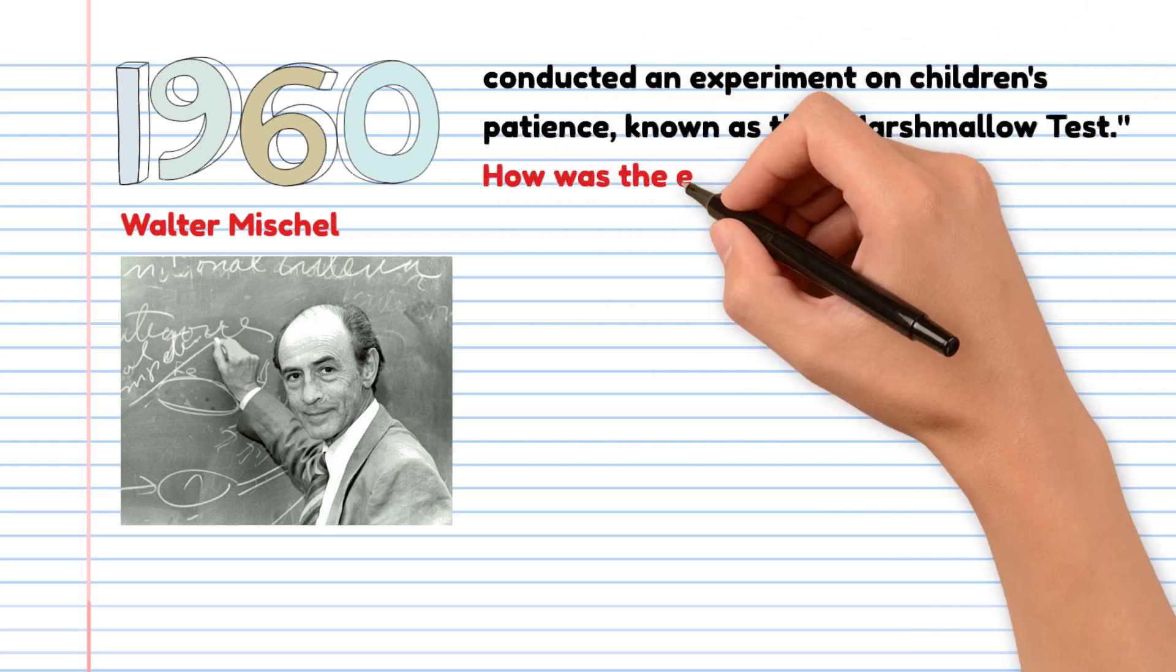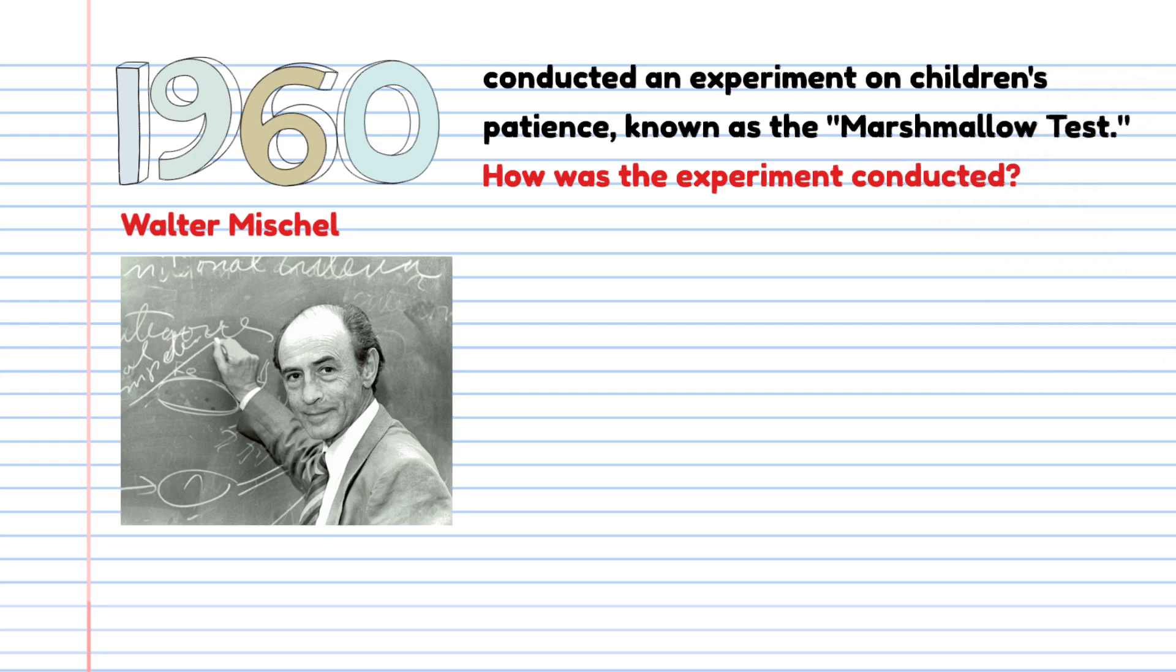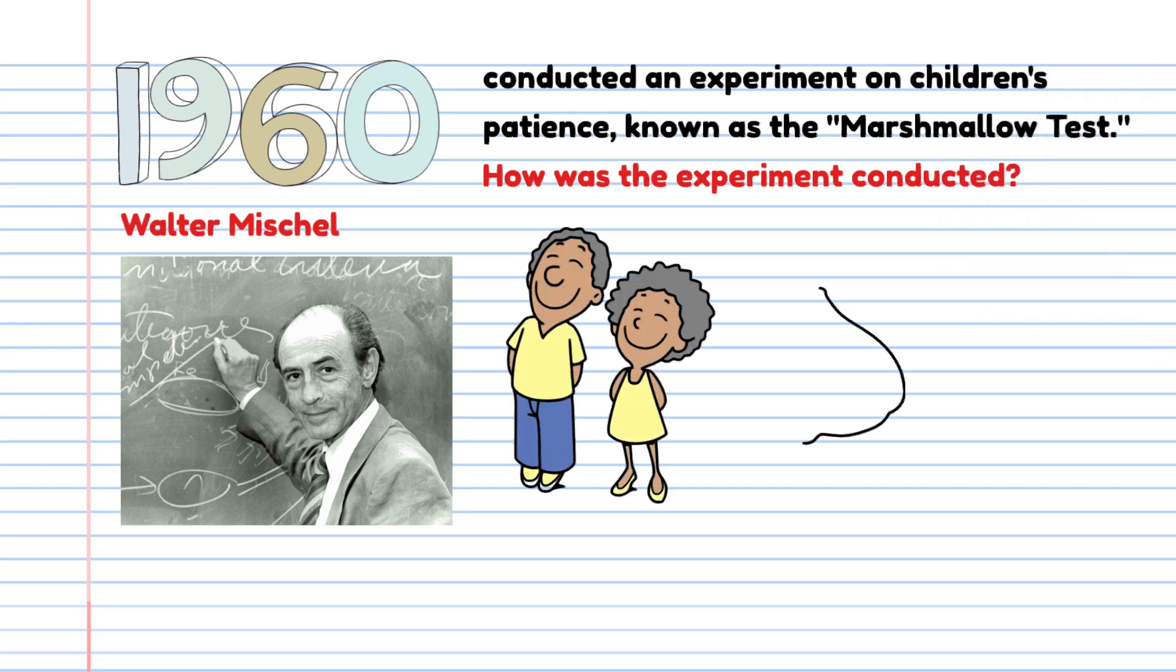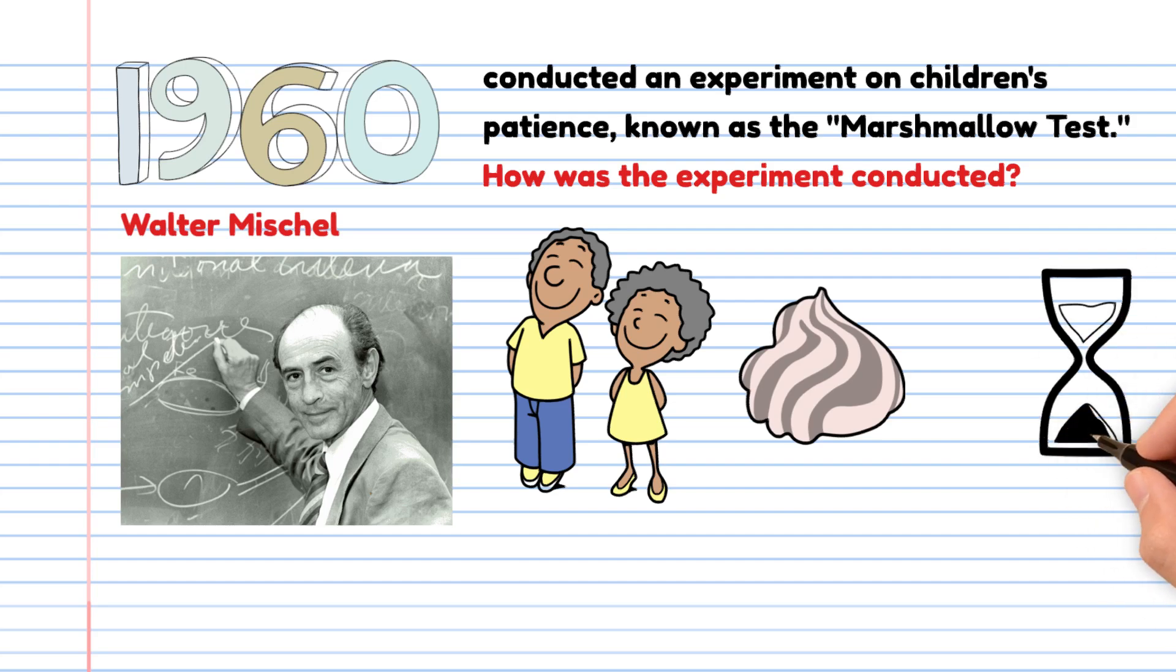How was the experiment conducted? Children were offered a marshmallow and told to leave the room without eating it for a certain period. If they managed to wait, they would receive a second marshmallow.